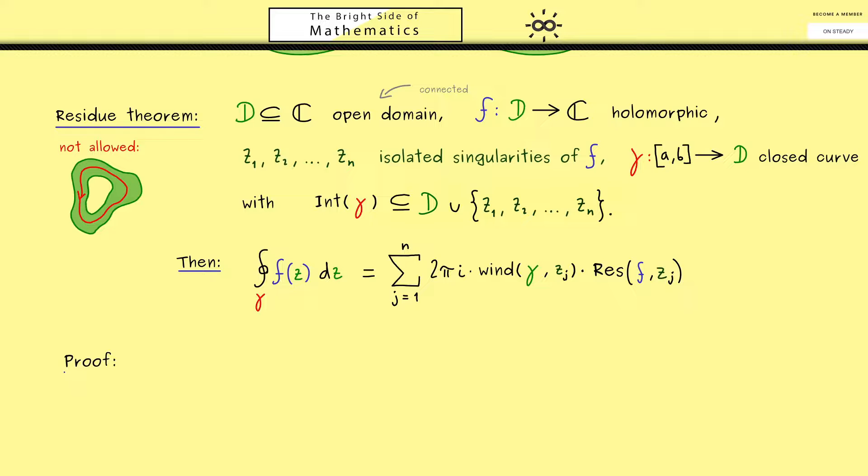And as promised let's keep the proof simple. So therefore let's assume that our open domain D is an open disk in C. Or more concretely the open disk should be called D tilde. Because then our D is given by D tilde without the singularities. So you see we have a very concrete domain here. So for example it could look like this and there we have our singularities inside.